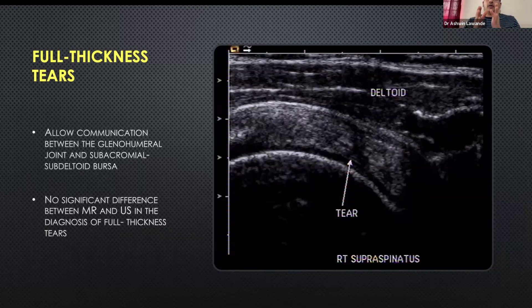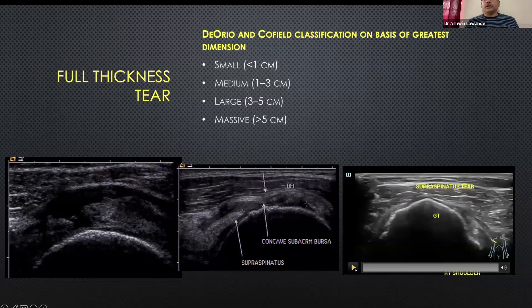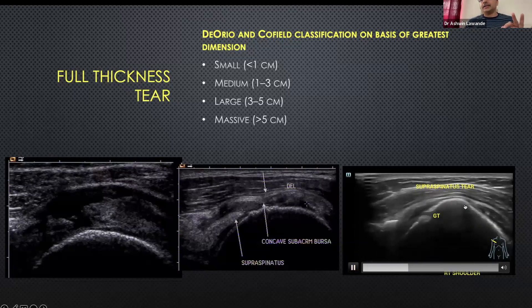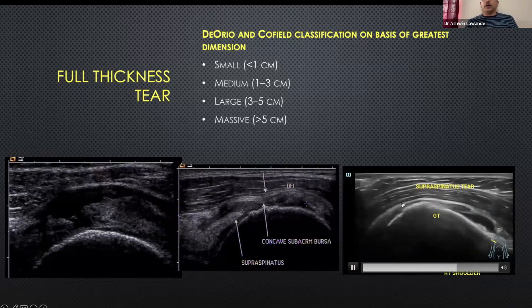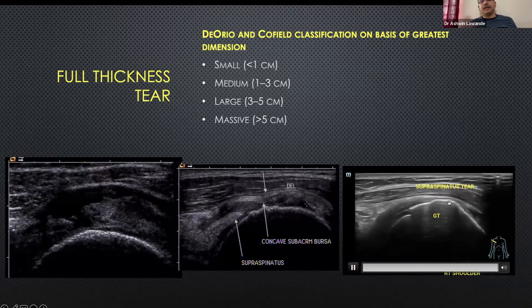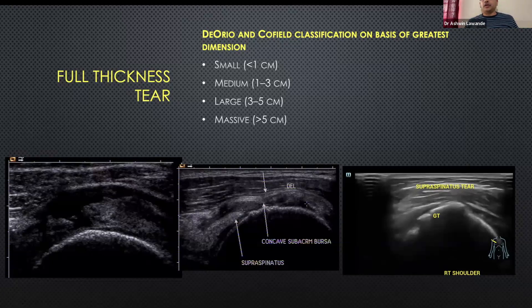A full thickness tear can involve only a small portion of the tendon, half the width, or the full width — and when the full width is involved, you get significant retraction. Smaller ones are less than one centimeter, medium ones are one to three centimeters. When more than one tendon is involved, you have a massive tear: you don't see any supraspinatus or infraspinatus at the tuberosity — just the deltoid lying over the naked tuberosity, with significant chronic retraction and muscle atrophy.